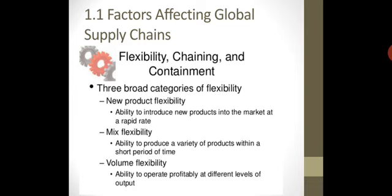Inventory is very fast moving in supply chain. The flexibility goal is mixed flexibility, because they are building many different products. Volume flexibility is the ability to operate profitably at different levels of output — you have to see how much product you can make and how much profit you can make.